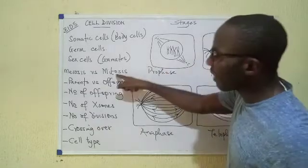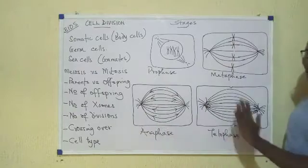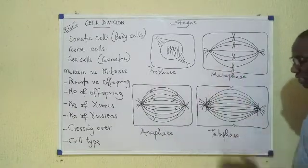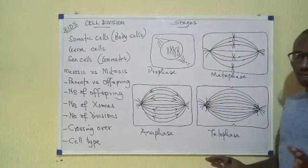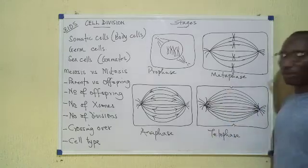But in the case of mitosis, they all occur just once: prophase, metaphase, anaphase, telophase, final products. That's one important thing about the two of them.